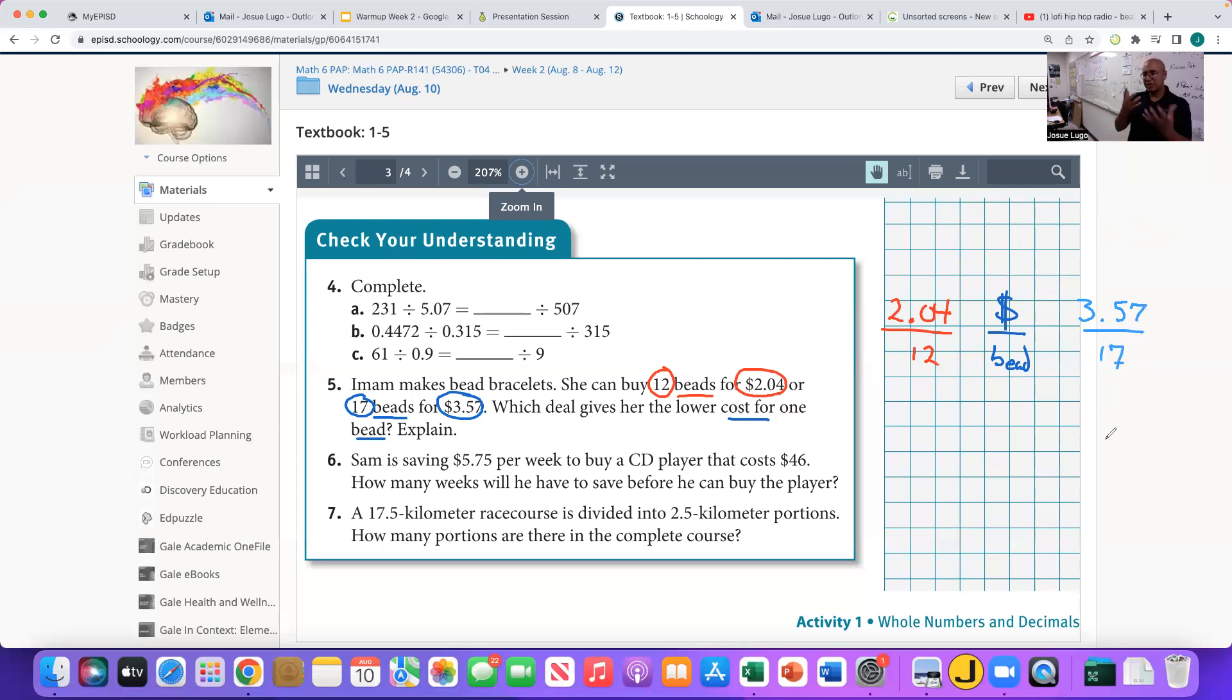And we want to see which is going to give us the better deal. Well, ladies and gentlemen, just solve both division problems. $2.04 would go in the division box. That's our dividend. Divide that by 12. And that will give you the cost for just one bead using that deal. Now, notice that there are no decimals on the divisor. So I don't have to move decimals over. Just solve it normally and shift the decimal up. And same thing for the other deal. And then verify to see which is going to give you the lowest cost per bead.